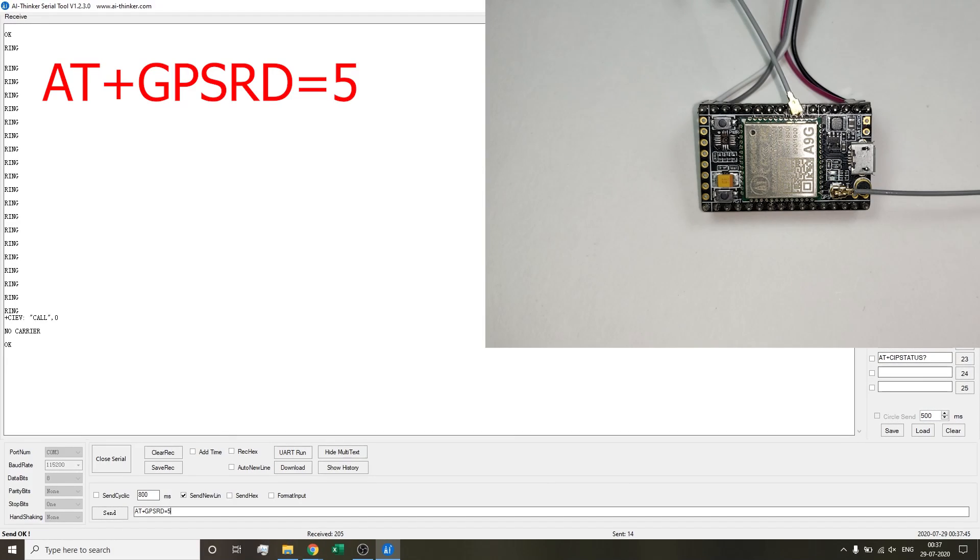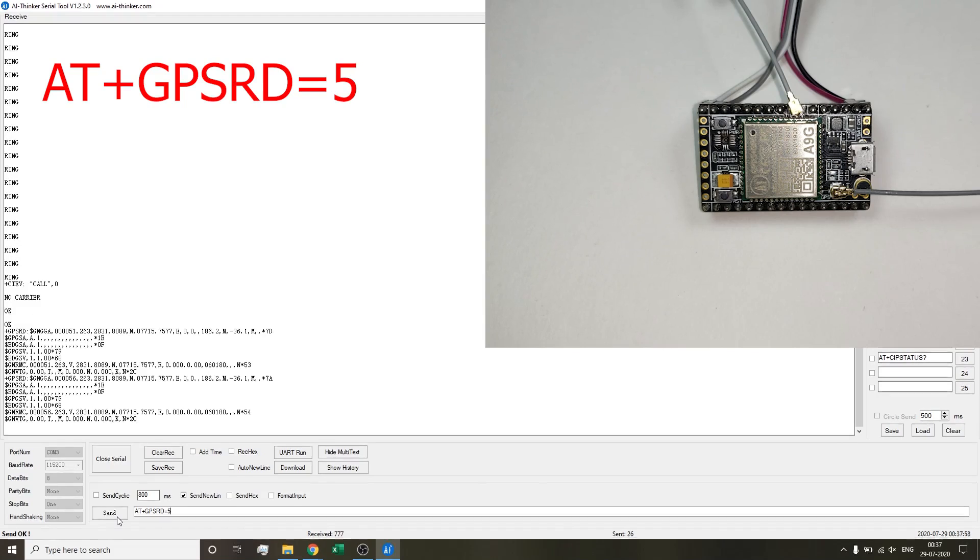Once that is sent, you can see that the bottom LED, which is the GPS LED, starts blinking at a good frequency. This means that the GPS is on for the module. Now to get the GPS location, we need to type the following command: AT+GPSRD. This command basically reads the GPS coordinates, and the parameter which is 5 right now is the time interval of reading.